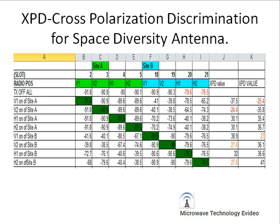To calculate the XPD value for an XPIC link, a space diversity antenna diagram is used. The first step is to turn on the transmitter for all antennas and measure the RSL. Then, turn on the transmitter for the V1 radio and check the RSL of V1, V2, H1, and H2. Here V1 and V2 refer to Site A vertical polarization antennas, and H1 and H2 refer to horizontal polarization radios.